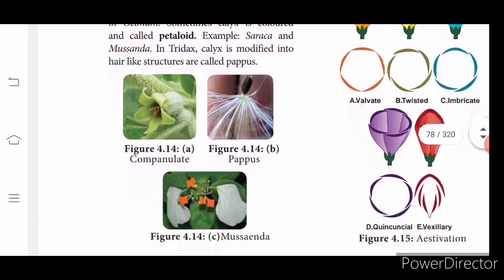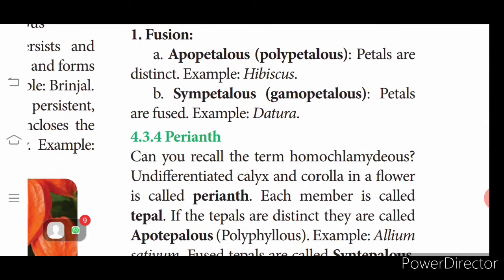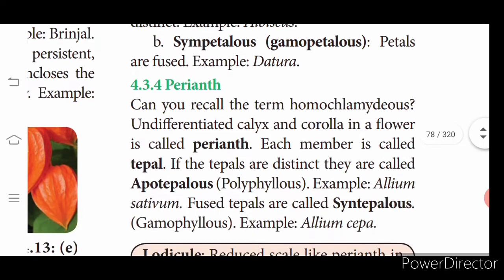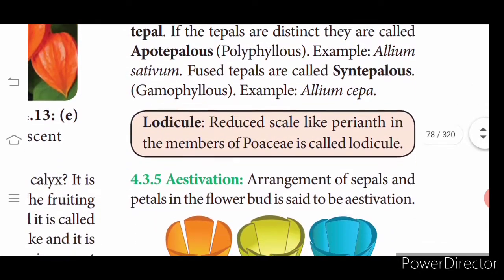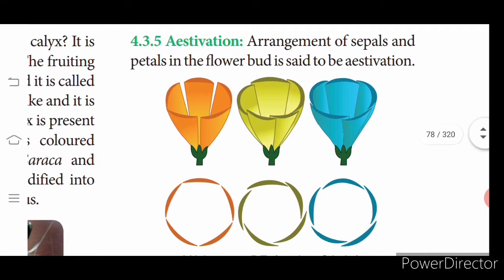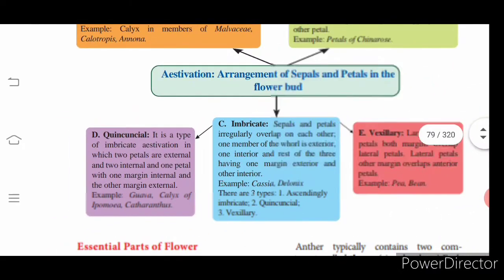Shapes of calyx: campanulate (bell-shaped), urceolate (urn or pot-shaped), tubular, and petaloid (colored to attract insects). Corolla is the most attractive part of the plant; flowers are brightly colored to attract pollinators. Apopetalous: petals are distinct and separate. Sympetalous: petals are fused. Perianth refers to undifferentiated calyx and corolla, called tepals. Apotepalous: tepals are free. Syntepalous: tepals are fused. Aestivation is the arrangement of sepals and petals in the flower bud.